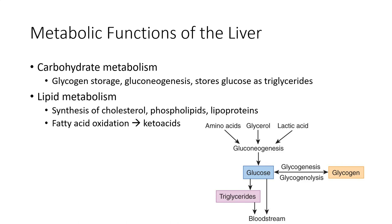The liver also converts excess carbohydrates to triglycerides for storage in our adipose tissue. While most cells of the body metabolize fat, certain aspects of lipid metabolism occur mainly in the liver. This includes the oxidation of free fatty acids to keto acids that supply energy for other body functions, the synthesis of cholesterol, phospholipids, and lipoproteins, and the formation of triglycerides from carbohydrates and proteins.